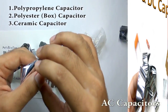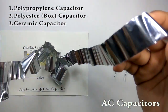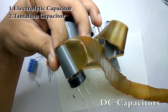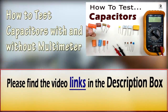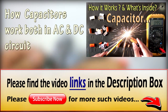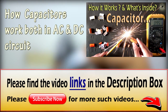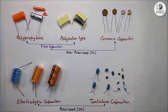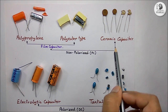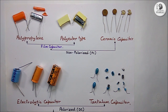Hello viewers, welcome to Tech Study Cell. In this video we will talk about the construction of different AC and DC capacitors, what are the differences between their design, and what materials are used to make them. In this video I will only focus on the design of these capacitors. First we will see the construction of polypropylene, polyester, and ceramic capacitors, which are the non-polarized or AC capacitors. Then we will discuss the electrolytic capacitor and tantalum capacitor, which are polarized capacitors.